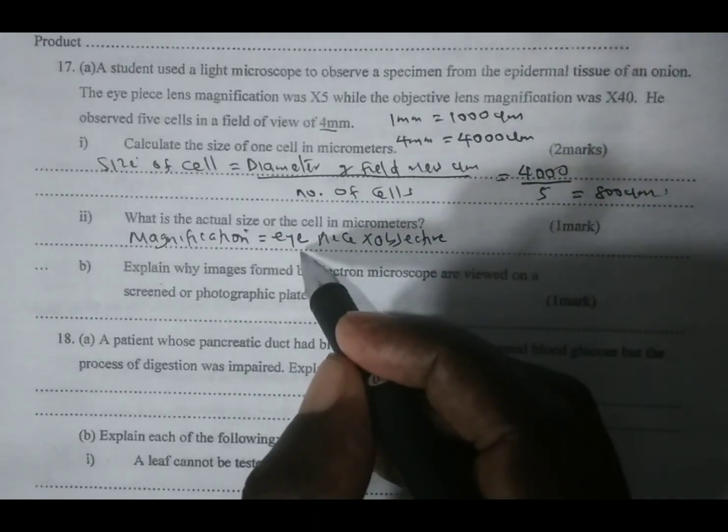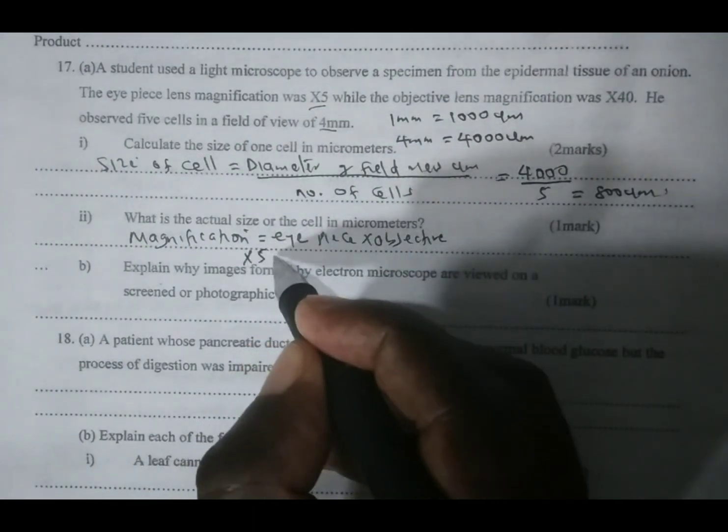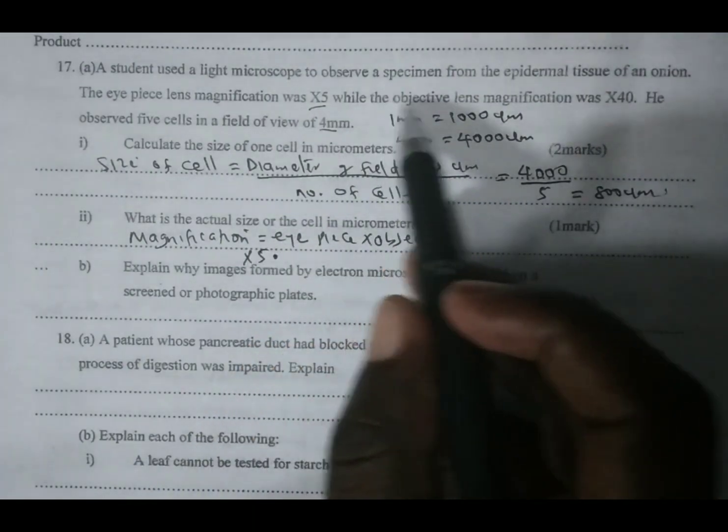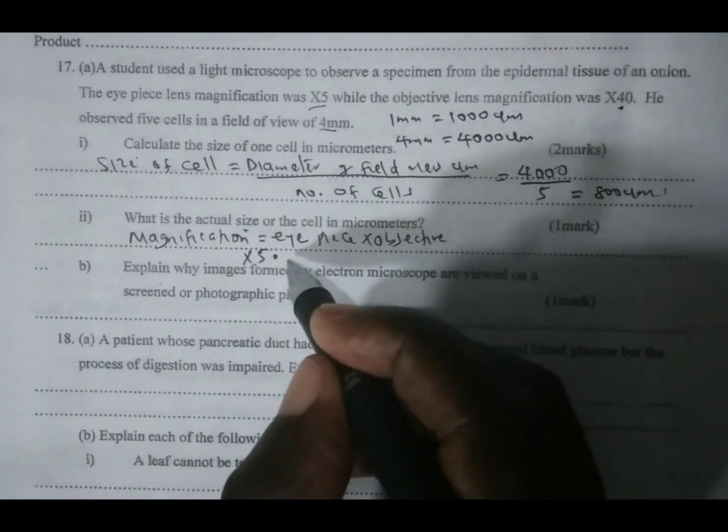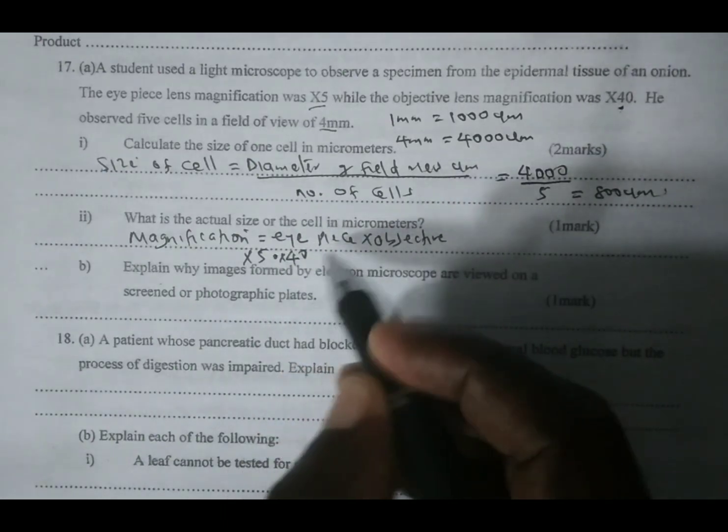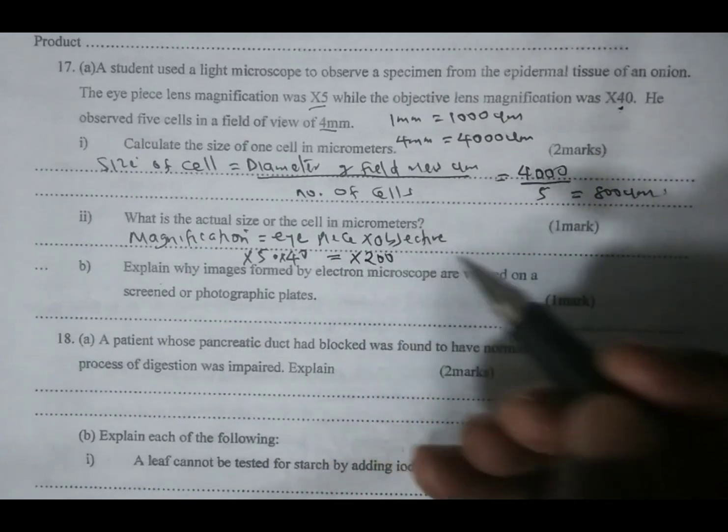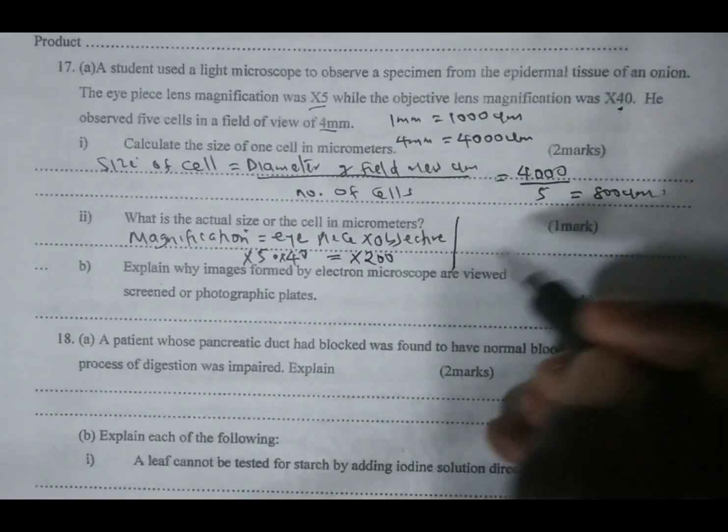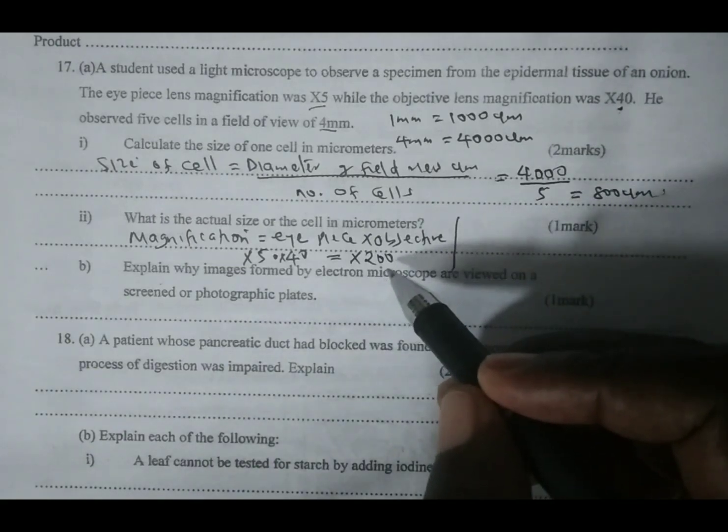The eyepiece magnification has been given to be X5. We multiply by the objective lens magnification, which has been stated to be 40. If you take 5 times 40, you get X200. What it means is that this cell has been magnified 200 times.